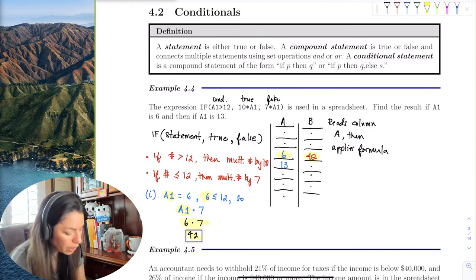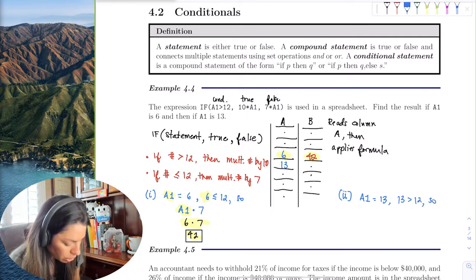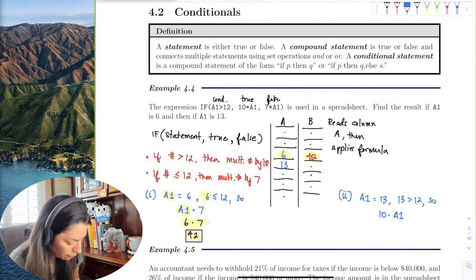Okay, so the next one: let's do when A1 equals 13. But 13 is greater than 12, so we'll multiply this by 10. And that means we'll have 10 times 13, which is 130.